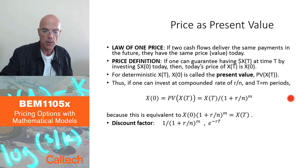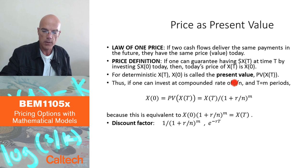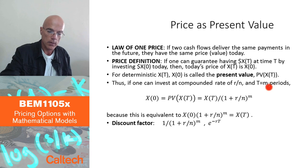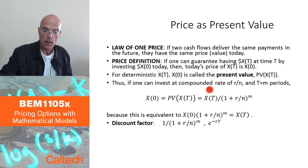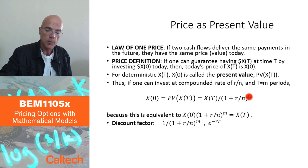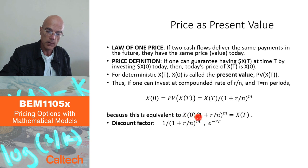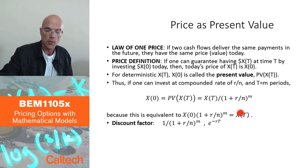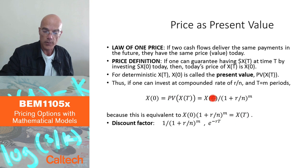Formally, if the rate is compounded n times a year and X(T) is paid m compounding periods from now, the present value is X(T) divided by (1 + r/n)^m. This is because X(0) × (1 + r/n)^m = X(T), meaning if I invest X(0) today in the bank, I will have X(T) at time T.